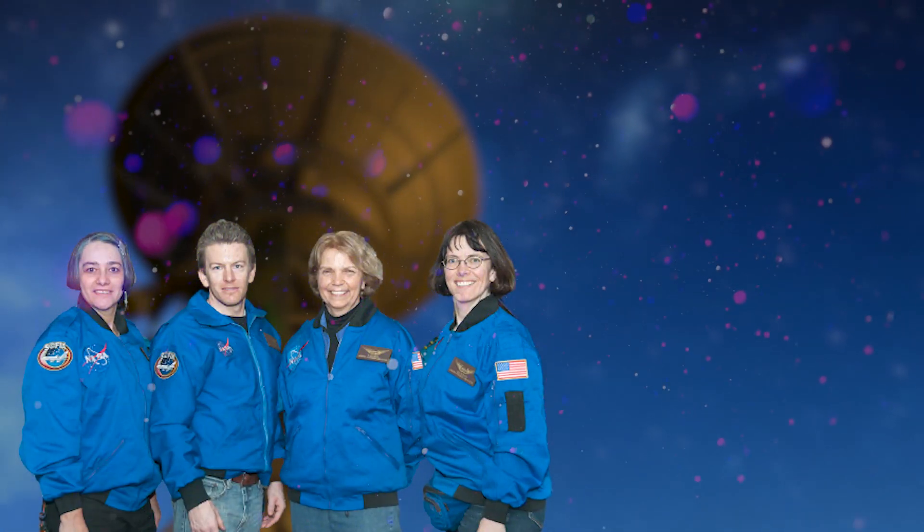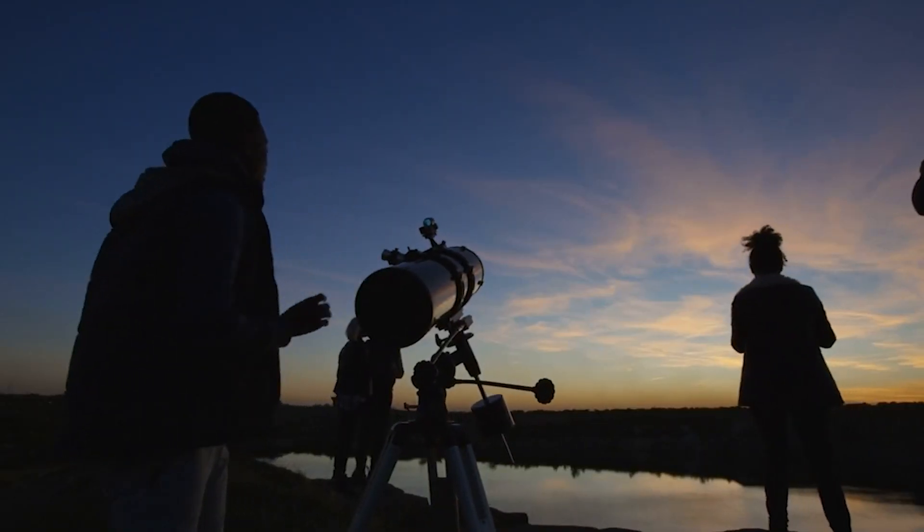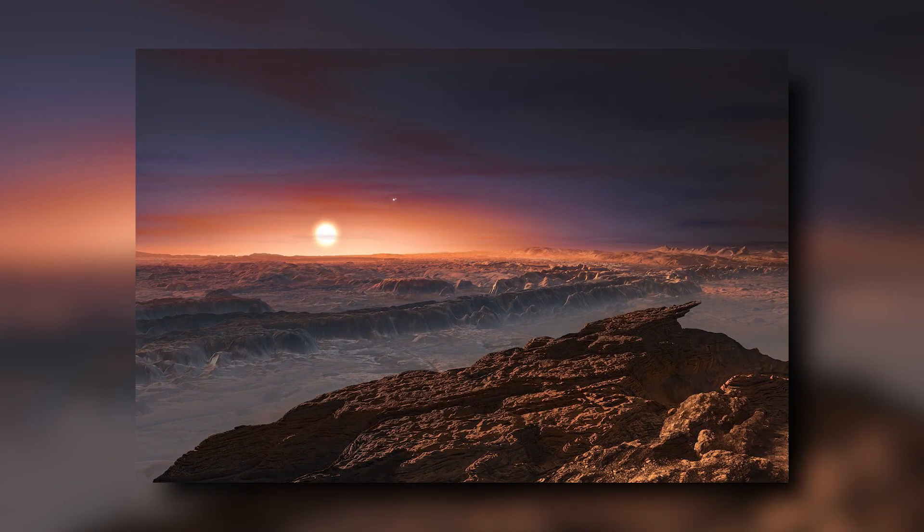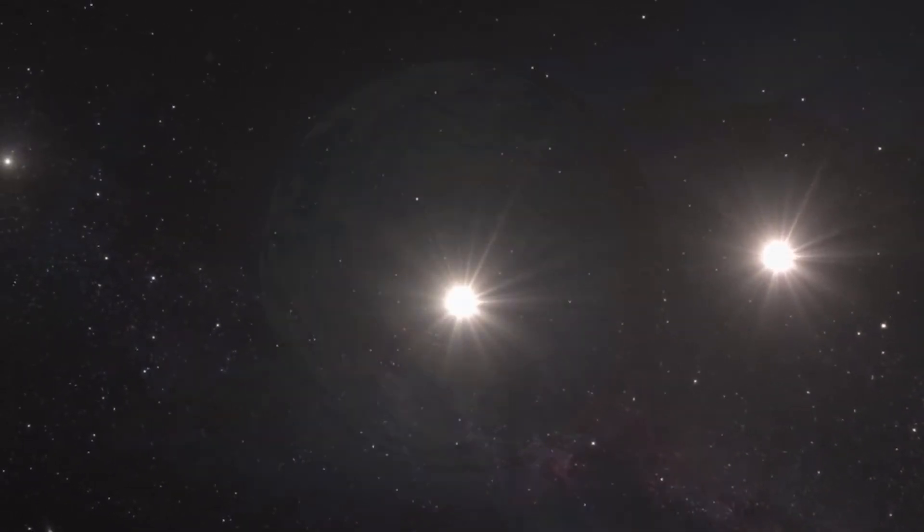The study by a team including controversial Harvard astronomer Harvey Loeb suggests that the optical telescope can be configured to spot evidence of LED light on the planet Proxima b, orbiting Proxima Centauri 4.2 light-years from Earth.